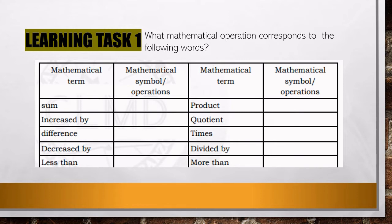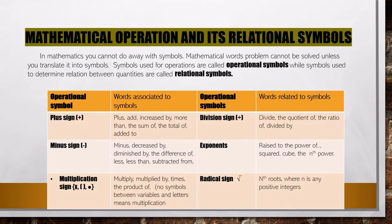For Learning Task number one, you are going to give the mathematical operation that corresponds to the following words — these are mathematical terms and you will give the mathematical symbol or operation. For example, the word 'sum' uses the plus sign. In mathematics, symbols are essential — symbols used for operations are called operational symbols, while symbols used to determine relations between quantities are called relational symbols.